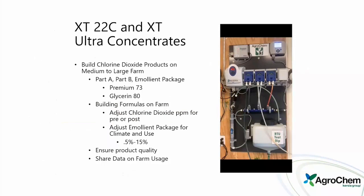One of our automated systems uses parts A and B plus an emollient package. Premium 73 includes lanolin, and Glycerin 80 is now a mix of glycerin and sorbitol. We can build formulas on-farm, adjust chlorine dioxide ppm for pre and post, and adjust emollient packages from half a percent to 15% based on climate and usage. All data is stored in the system. The system shuts down if it is not producing product in the correct range, uses a water meter, and adjusts automatically — taking away concerns about incorrect operation.